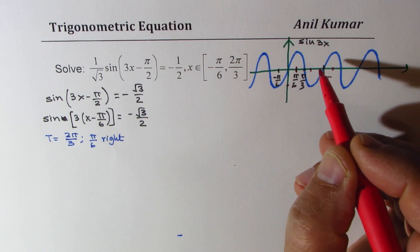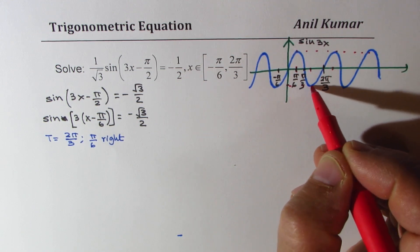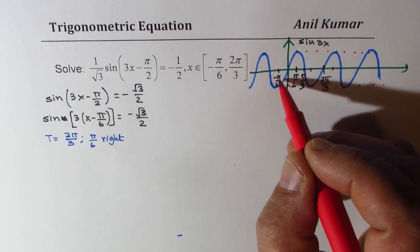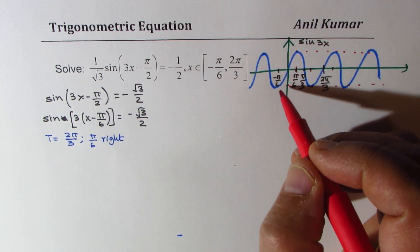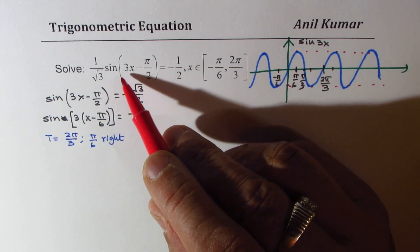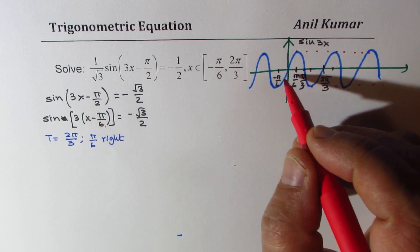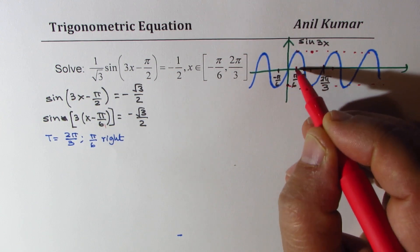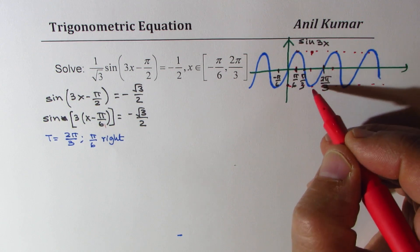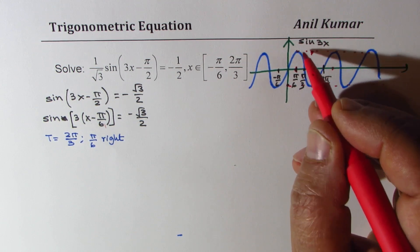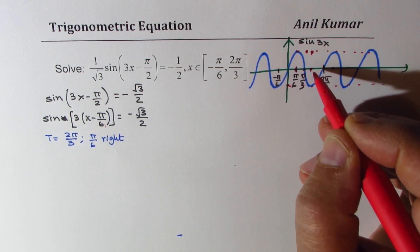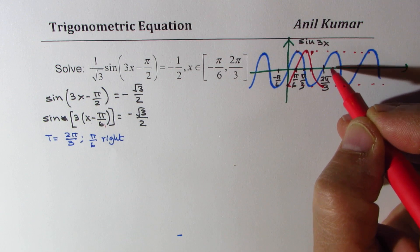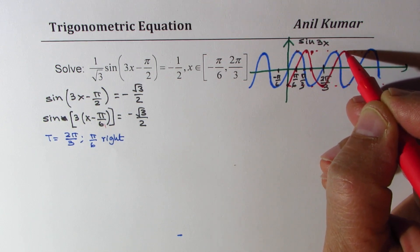So here we'll get the minimum. Maximum being maintained, minimum being maintained. All the points are moving pi by 6 unit to the right. So the graph for the function sine 3x minus pi by 6 will look like this maximum comes here. So we have these points to connect.